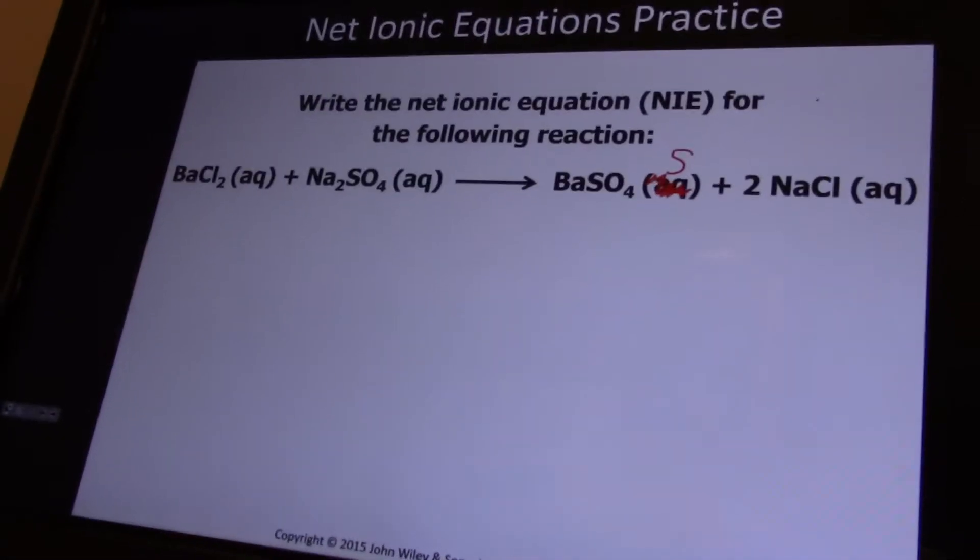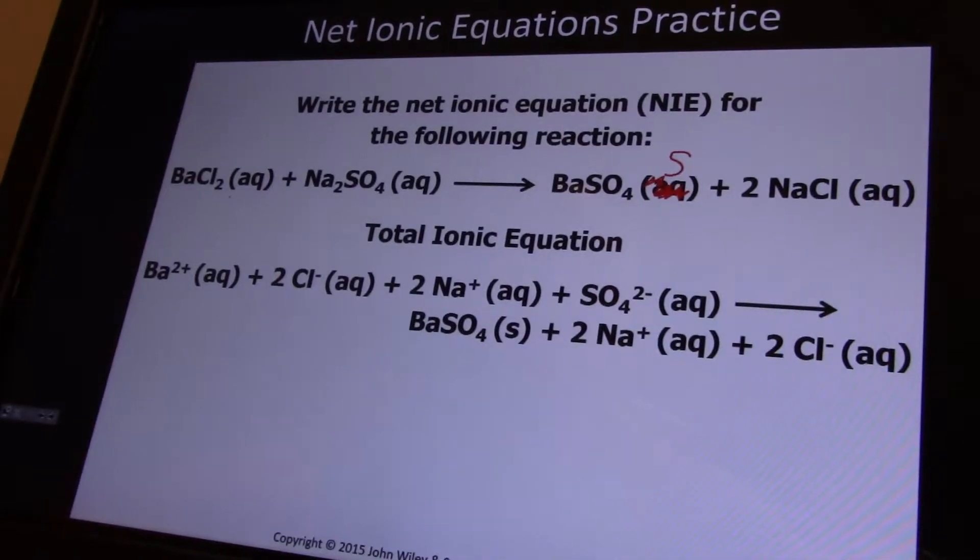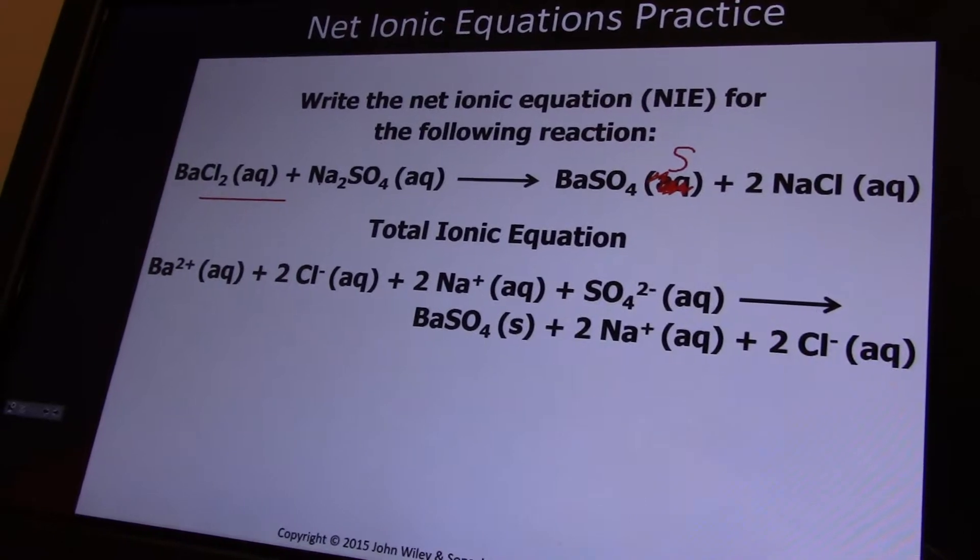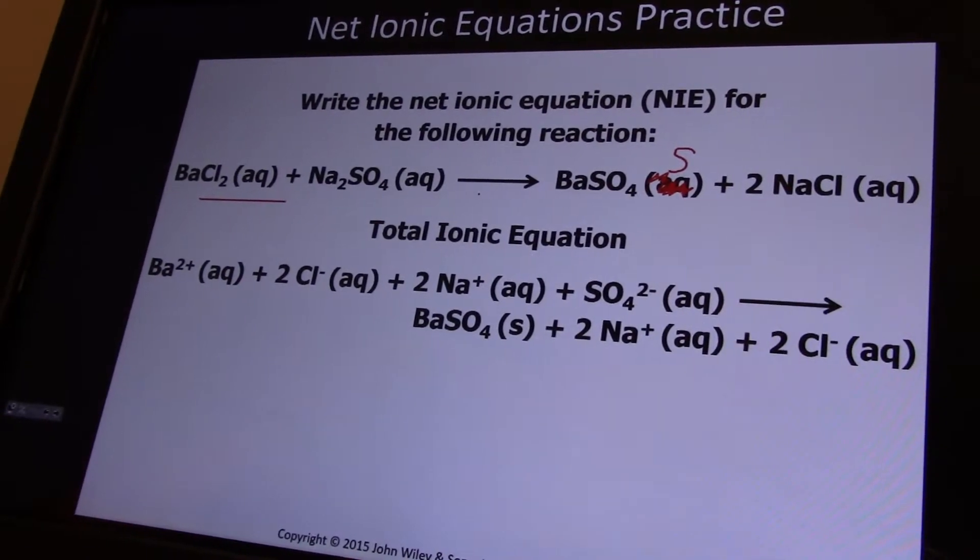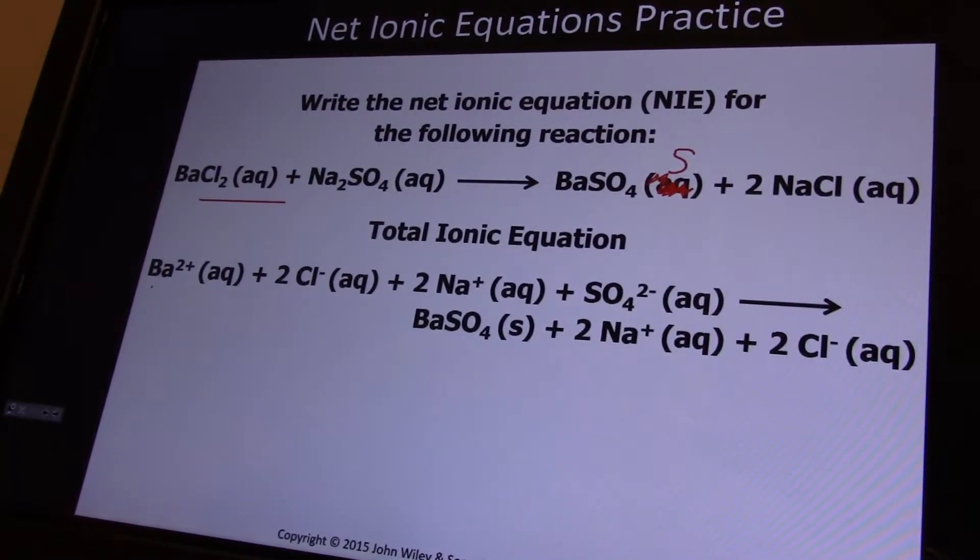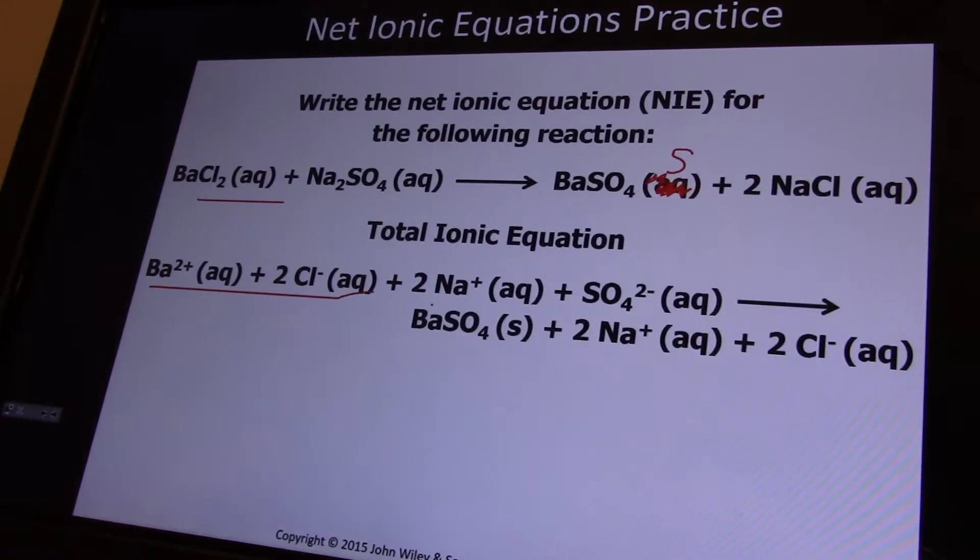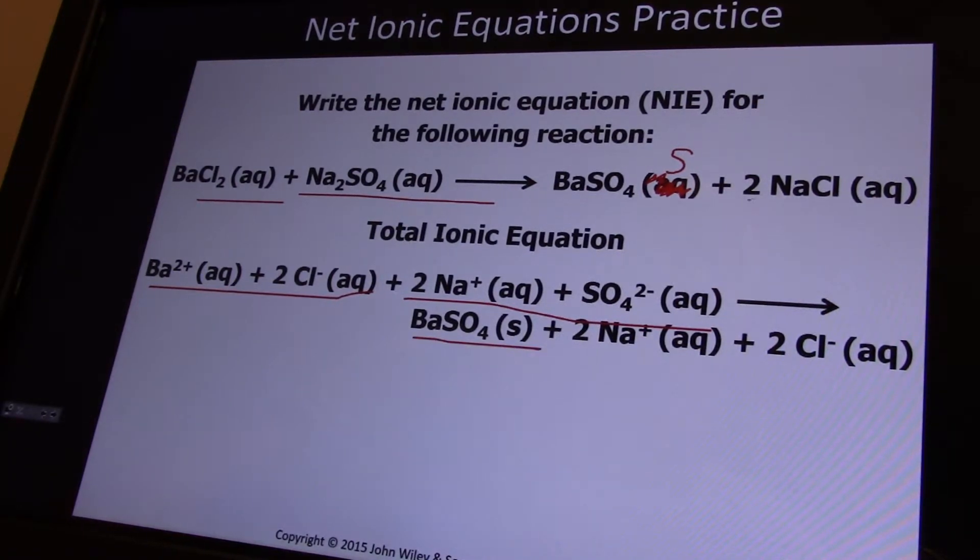So barium chloride is a soluble salt. You know it's soluble because it says aqueous. If it was insoluble, it would be solid. We break it apart into its ions. Sodium sulfate breaks apart to its ions. Barium sulfate is a solid, so it stays together. Sodium chloride is aqueous, so we break it apart into its ions. Now we cancel out the spectators.